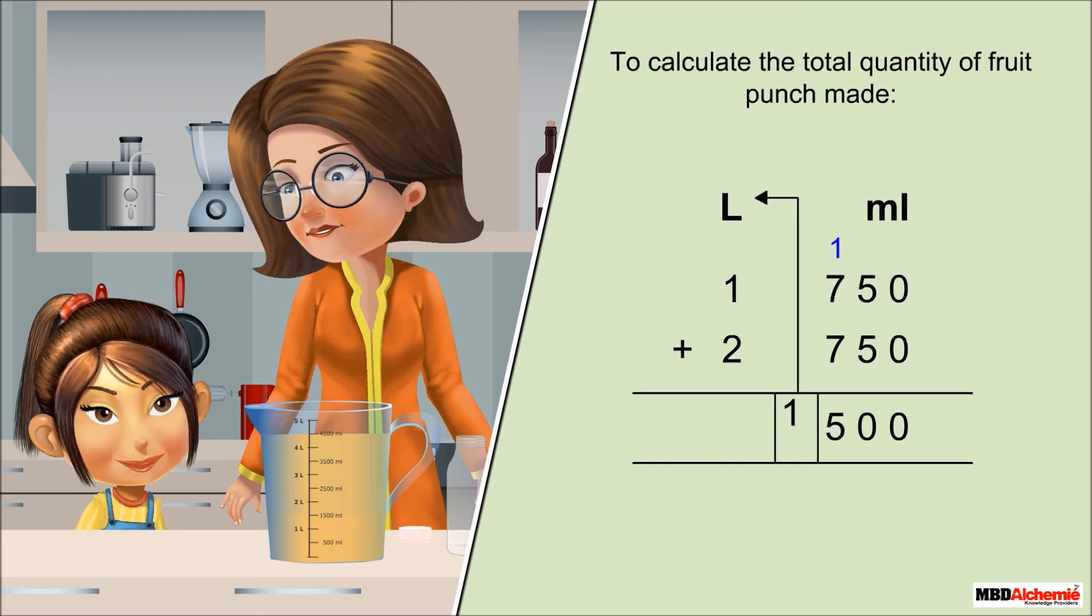Now 1 plus 1 plus 2 gives 4 liters. Mother says we prepared 4 liters 500 milliliters of fruit punch.